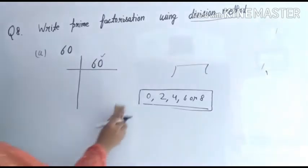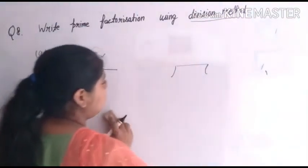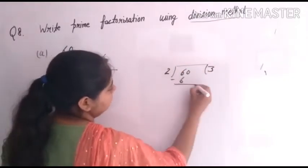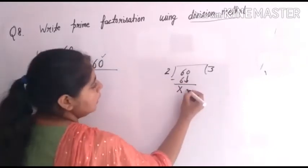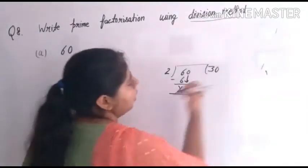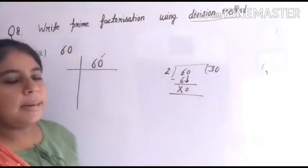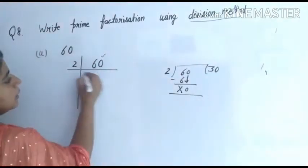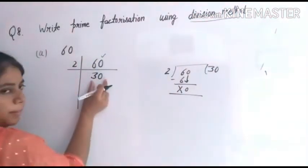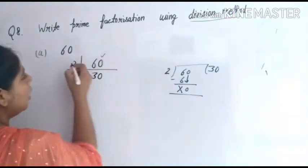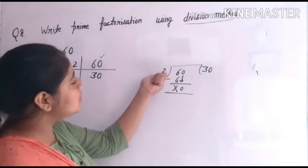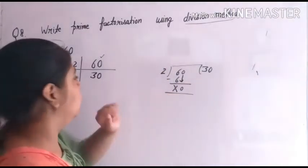So let's divide sixty by two. Two threes are six — zero brought down — zero here since it doesn't divide. In the two times table, 60 divided by 2 equals thirty. We write the quotient here and the divisor in this place. Quotient is thirty.